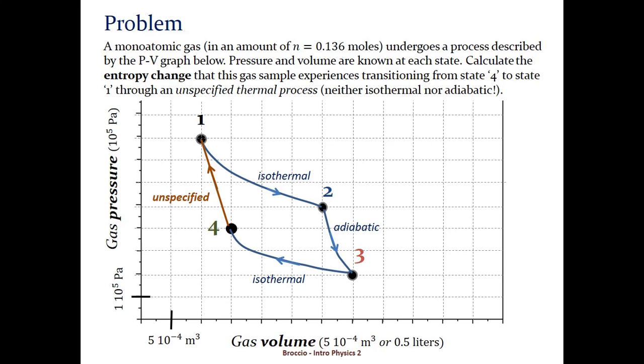A monoatomic gas in an amount of 0.136 moles undergoes a process described by the PV graph below. Pressure and volume are known at each state. Calculate the entropy change that this gas sample experiences transitioning from state 4 to state 1 through an unspecified thermal process.